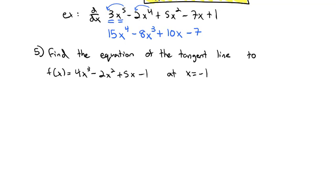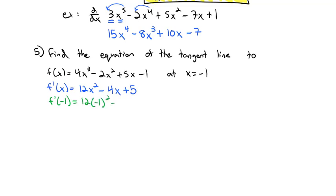First, we're going to take the derivative: f prime of x is equal to 4 times 3 is 12, x squared — subtract 1 from the exponent — minus 2 times 2 is 4x, plus 5, and the x disappears. We want it specifically at x equals negative 1, so f prime of negative 1 is 12 times negative 1 squared, minus 4 times negative 1, plus 5. Working that out, it becomes 12 plus 4 plus 5 is 21. So the slope we now know is 21.